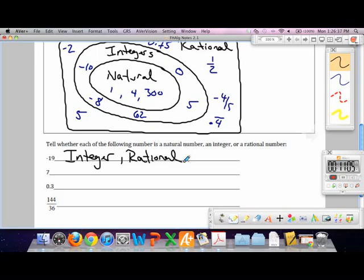How about seven? What type of number is seven? It's a natural. It's a positive whole number. If it's a natural, what else is it? It's an integer. And if it's an integer, it's also a rational number. I abbreviated it. Make life a little bit easier.